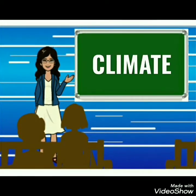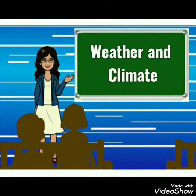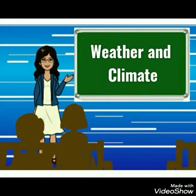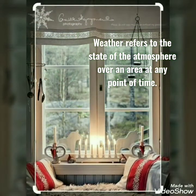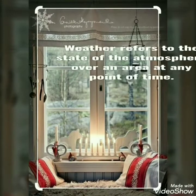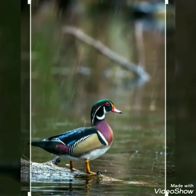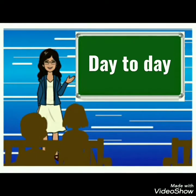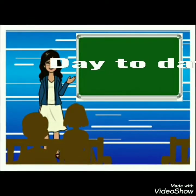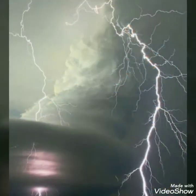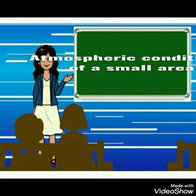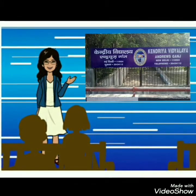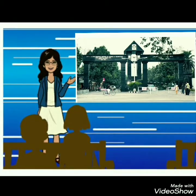Let's start today's class on the topic of climate. Weather and climate are two words that people often use as synonyms, but they have different meanings. Weather is the day-to-day atmospheric condition of a small area at a particular point of time. It is always used to describe atmospheric conditions of a small area, for example Andrewsganj in Delhi, Neerjuli in Arunachal Pradesh, or the small area where you live.